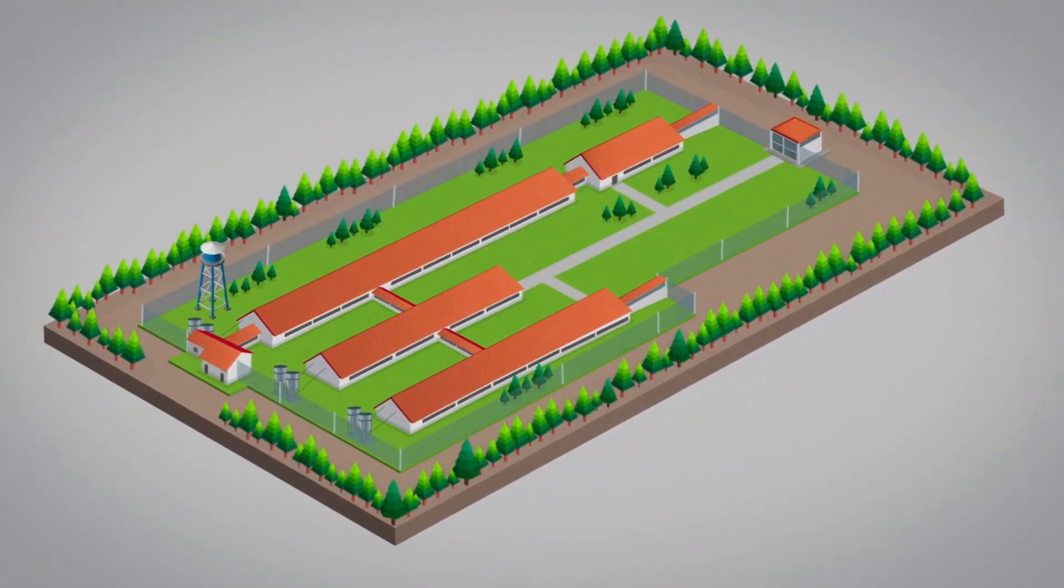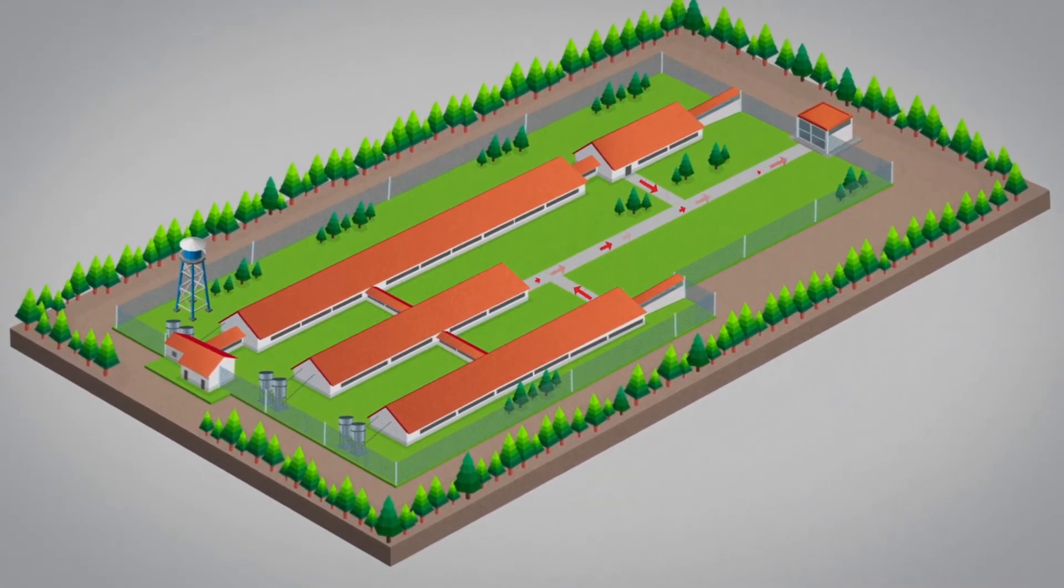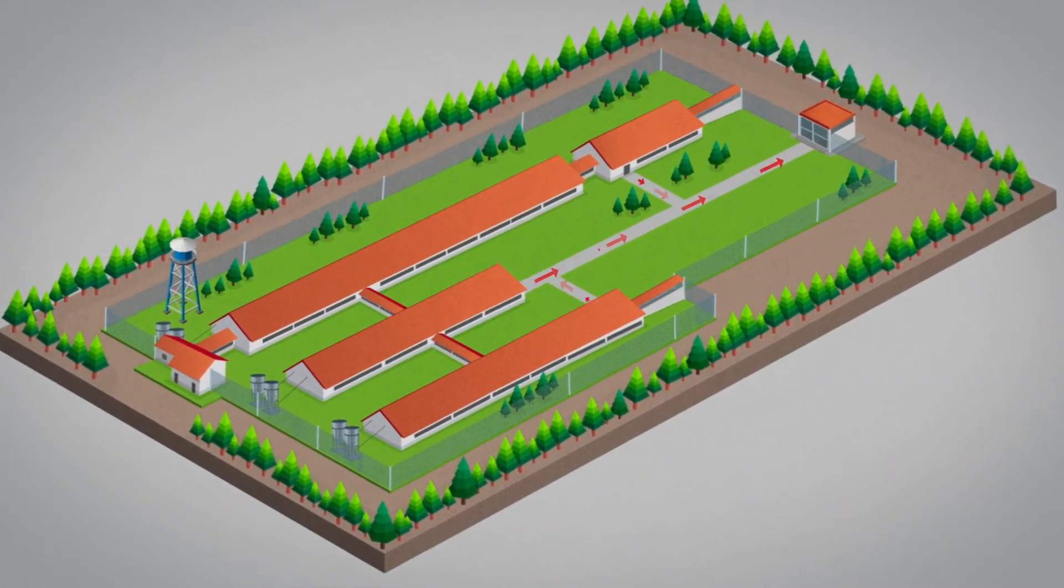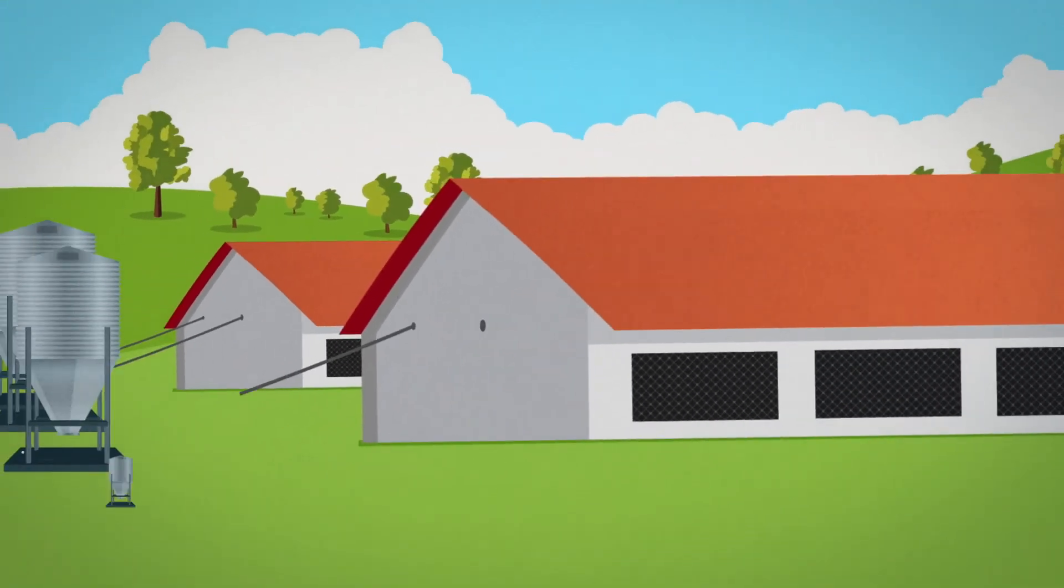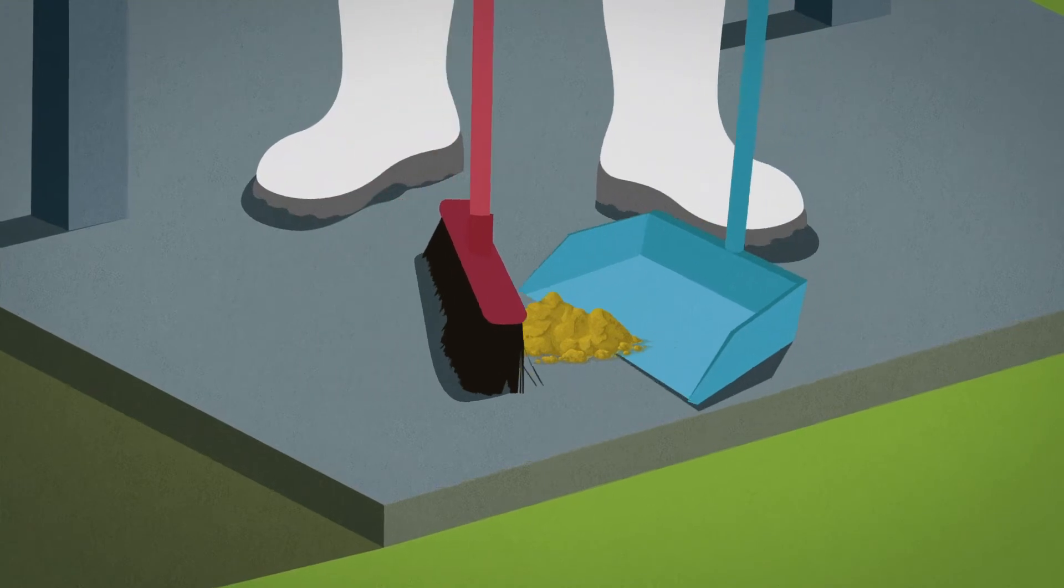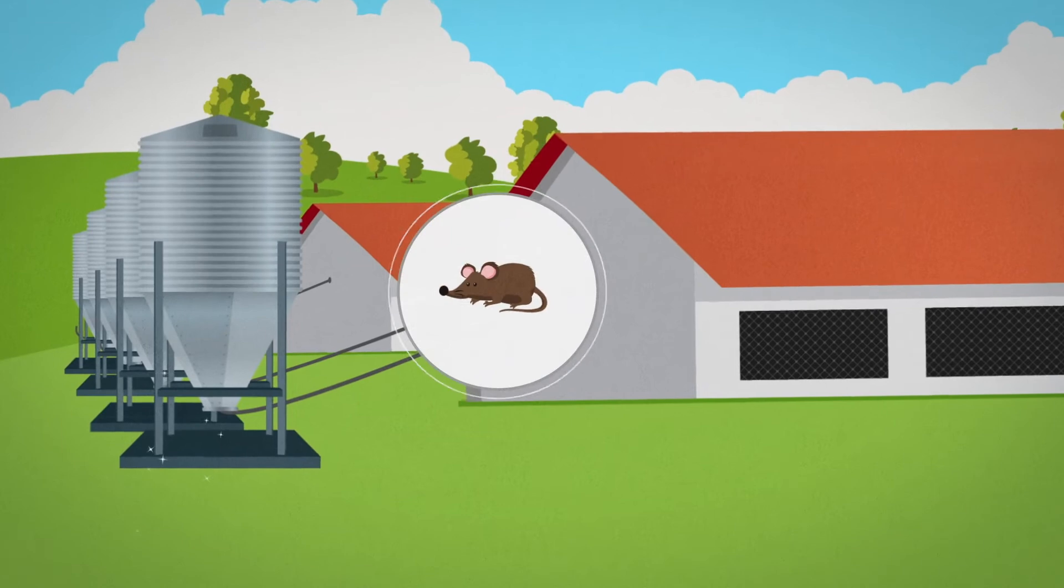In addition, to protect the integrity of the clean-dirty line, the farm must follow unidirectional flow for mortality removal from the farm, keep feed bin pads clean at all times, and promptly remove any feed spills to avoid attracting other animals.